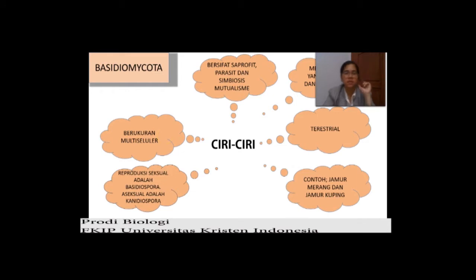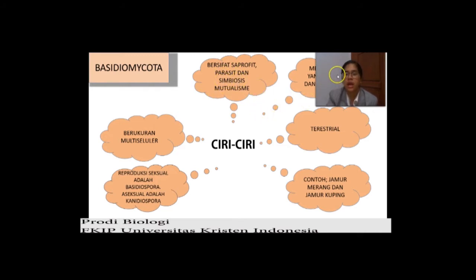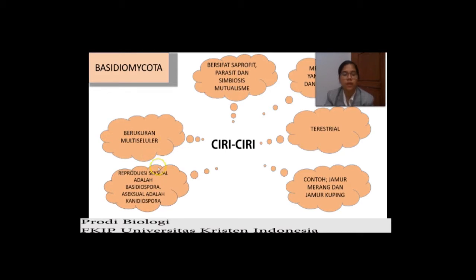Selanjutnya ada Basidiomycota. Dia ada yang bersifat saprofit, ada yang parasit, ada yang simbiosis mutualisme juga. Kemudian dia memiliki hifa yang bersekat atau septa, kemudian berinti satu — setiap sekatnya itu berinti. Terestrial, hidup di daratan. Yang membedakan Basidiomycota dari yang lainnya adalah dia sudah pasti berukuran multiseluler atau makroskopis — dapat dilihat dengan mata secara langsung. Reproduksi seksualnya adalah basidiospora dan aseksualnya adalah konidiospora.